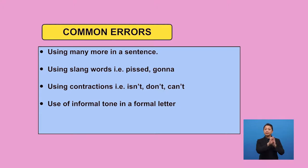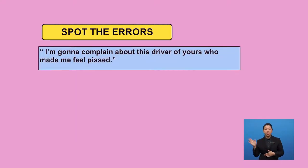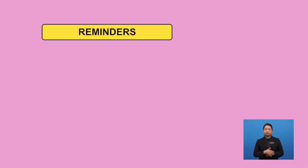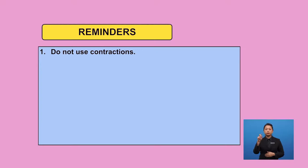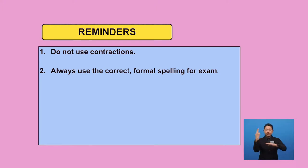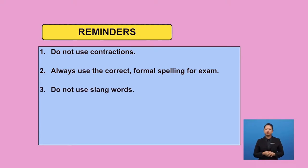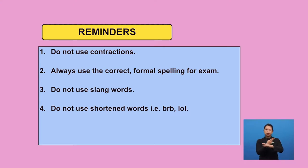For example, you cannot write like this: 'I'm gonna complain about this driver of yours who made me feel pissed.' There are many errors in this sentence. Let's look at them. First, the contraction 'I'm' — do not use contractions in formal letters. The word 'gonna' is a colloquial way for 'going to' — always use the correct formal spelling for the exam. The slang word 'pissed' should be replaced with 'angry.' Avoid using shortened words like the ones you always use to type in your text messages.